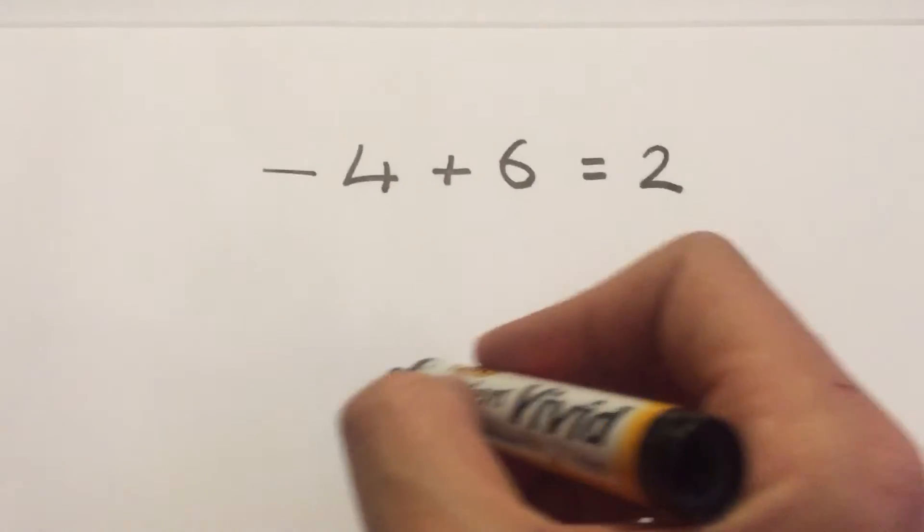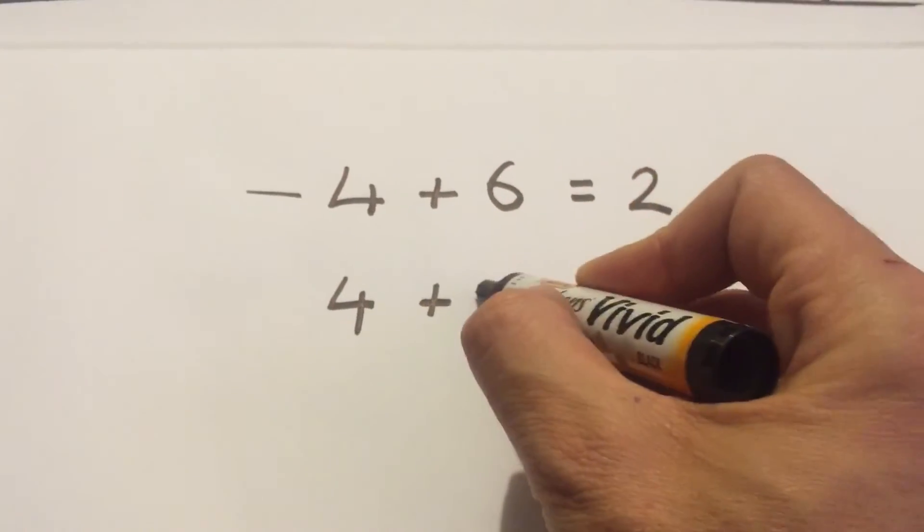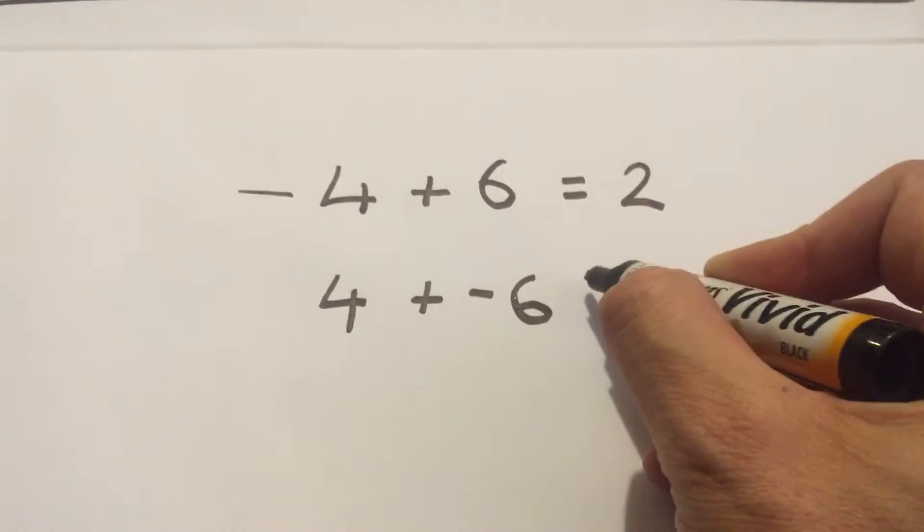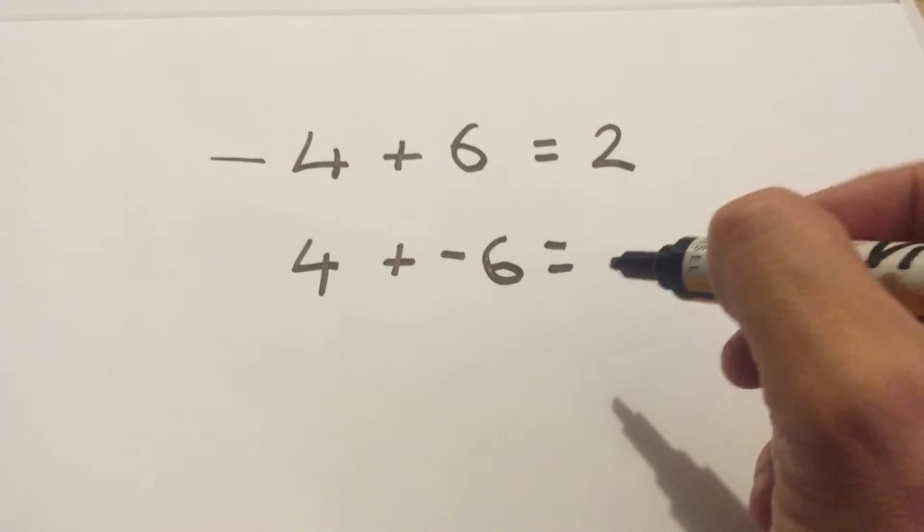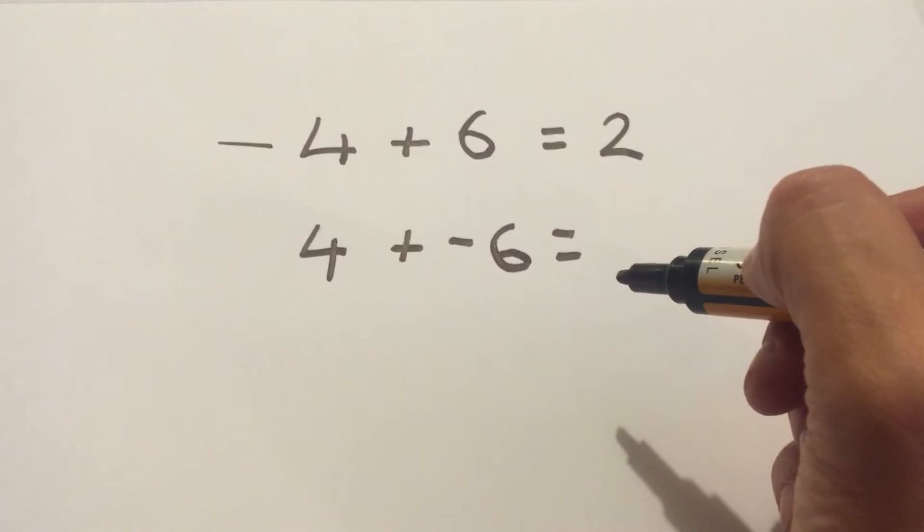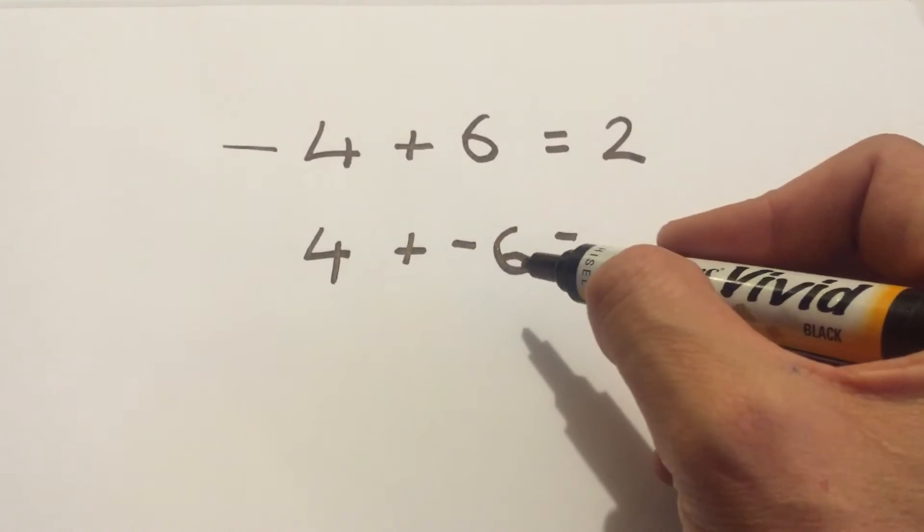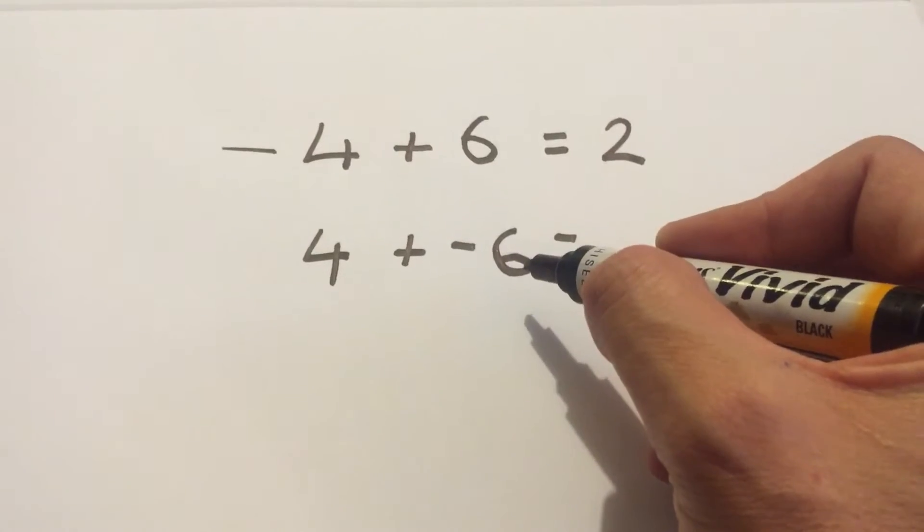Okay, but what about if it was 4 plus negative 6? Same kind of thing, just think about that number line in your head, but I've also got another trick that I quite like to use, which is if it was 4 plus a normal 6 or positive 6, you'd get 10.